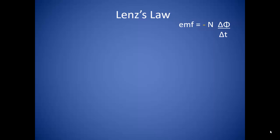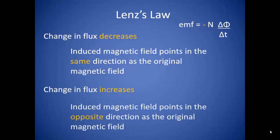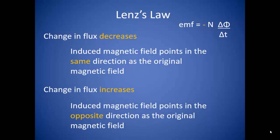At its most basic, Lenz's Law states that induction opposes any change in flux. This means that the electric current created by an induced EMF points in a direction so that the magnetic field it produces opposes the change in flux — hence the negative sign in the equation. If the magnetic flux decreases, the induced magnetic field will point in the same direction as the original magnetic field. If the magnetic flux increases, the induced magnetic field will point in the opposite direction.